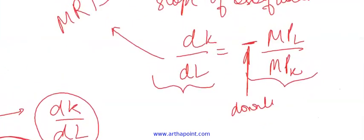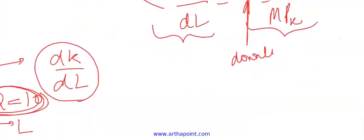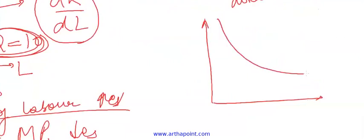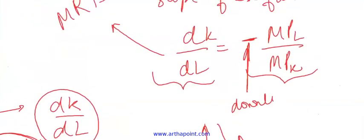First, let's interpret this slope. Because I am holding the level of output constant, the slope actually tells me how much of capital, when given up for an extra level of labor, would produce the same level of output. So this is telling me the rate at which I am going to substitute capital and labor for each other.